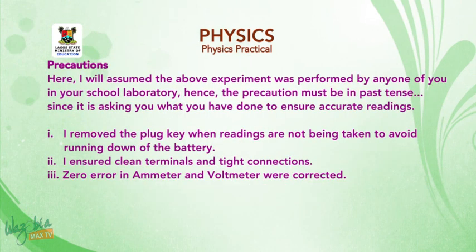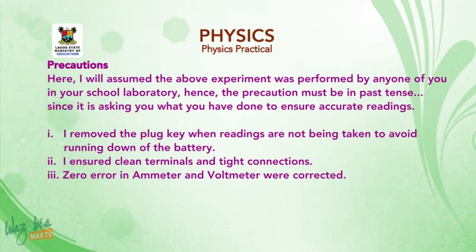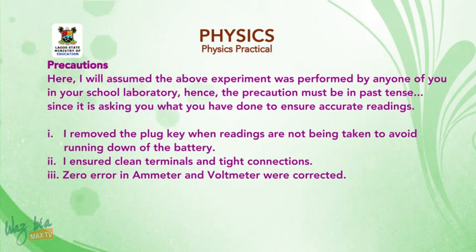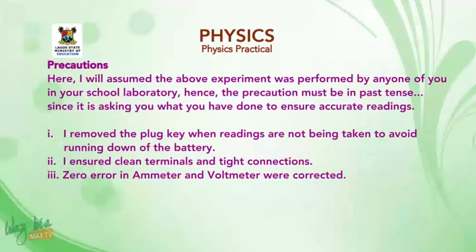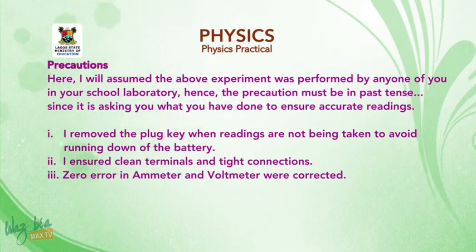Precautions: I will assume the above experiment was performed by any one of you in your school laboratory. Hence, the precautions must be in the past tense since the question asks what you have done to ensure accurate readings. 1. I removed the plug key when readings were not being taken, to avoid running down the battery. 2. I ensured clean terminals and tight connections. 3. Zero errors in the ammeter and voltmeter were corrected.